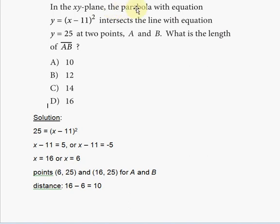In the xy-plane, the parabola with equation y equals x minus 11 squared intersects the line with equation y equals 25 at two points A and B. What is the length of the segment AB?